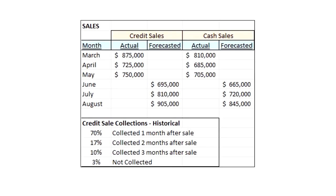As we take a look first at this sales fact pattern, I want you to note that we have both credit sales and cash sales. Now, for cash sales, that's easy. You sell it, you got cash right then and there. We don't have to worry about lag. If we sell $705,000 in May, we're collecting $705,000 in May.